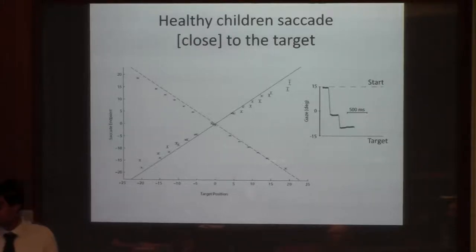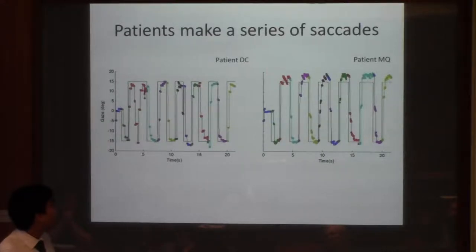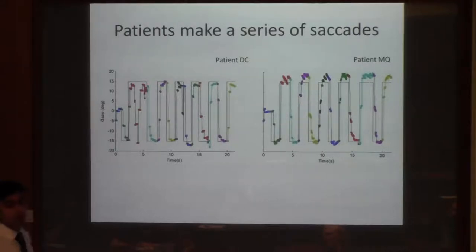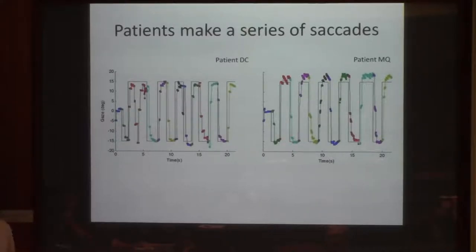By contrast, here are two example patients — a 7-year-old boy and a 25-year-old man. The boy is able to reach the target but does so with multiple steps: he jumps, jumps, jumps repeatedly. Rather than one or two saccades, these kids go maybe halfway, then a little further, pause, a little further, eventually reaching the target. They make what I'd call a series of saccades to achieve the target instead of going most of the way in one step.